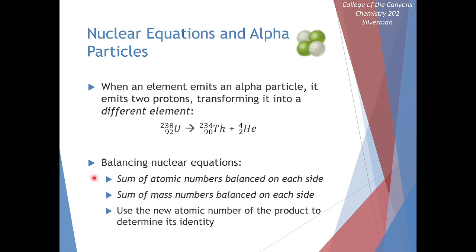This is going to be how we balance our nuclear equations. All of our mass numbers need to add up. The mass numbers on the left have to add up to our mass numbers on the right. Likewise, our atomic numbers on the left need to balance with our atomic numbers on the right. 92 on the left has to be the same as 90 plus 2 on the right. We can use this to predict the identity of our products from these alpha decay processes.